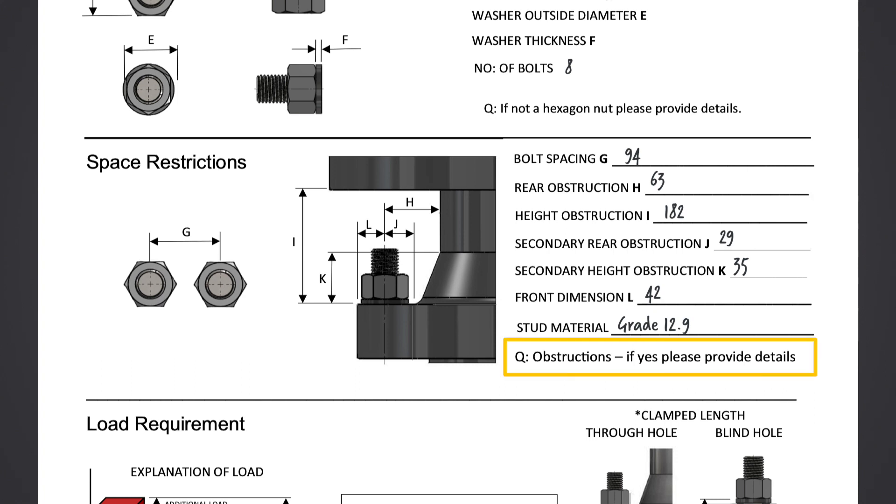If there are any other obstructions that have not been given, these would need to be stated. There may be an additional obstruction that only affects part of the joint, but these are often overlooked and need to be considered at design stage.